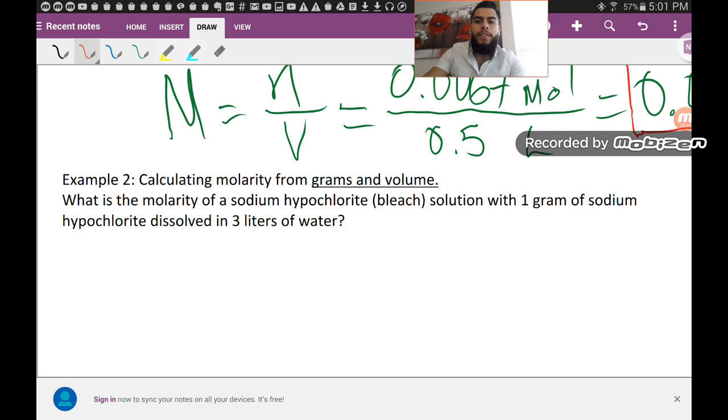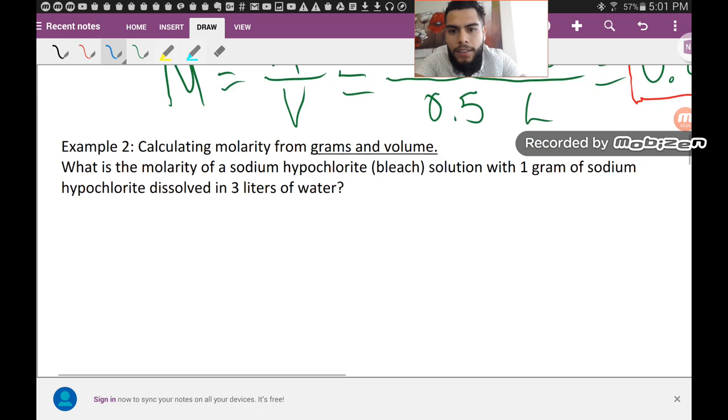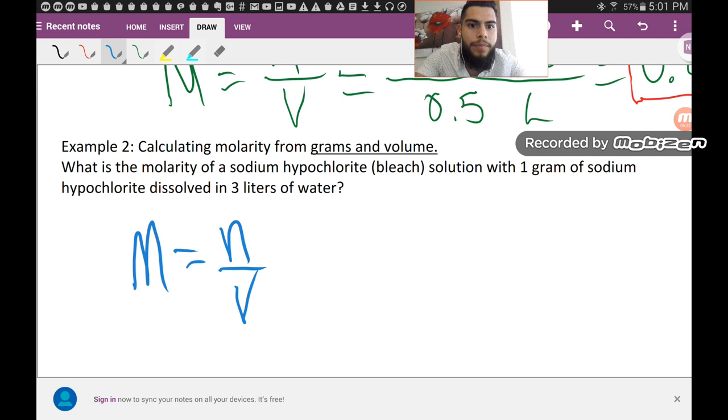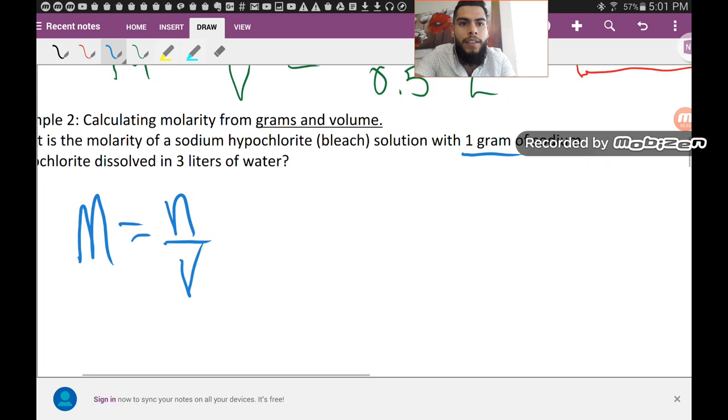Once again, the formula for molarity is: molarity equals n, the number of moles, divided by the volume. And the problem this time is that they are not giving us the number of moles. However, they're giving us grams. If you remember how to calculate the number of moles from grams, we're starting with grams of sodium hypochlorite solution. That is NaClO, that is the formula for sodium hypochlorite.